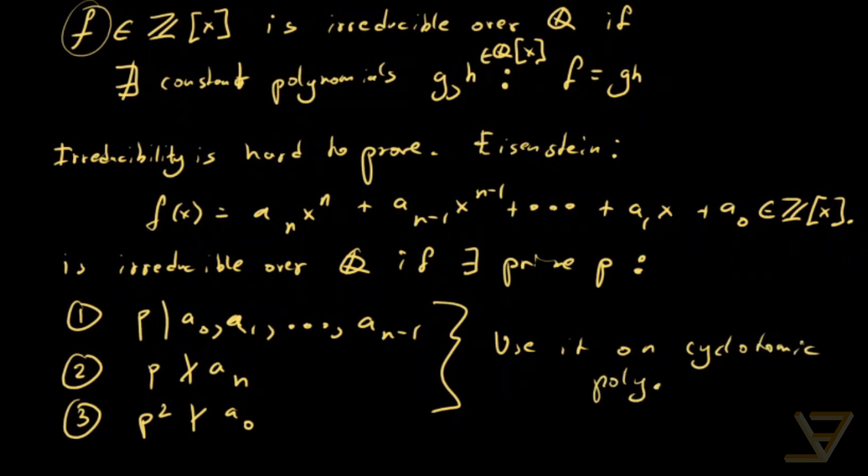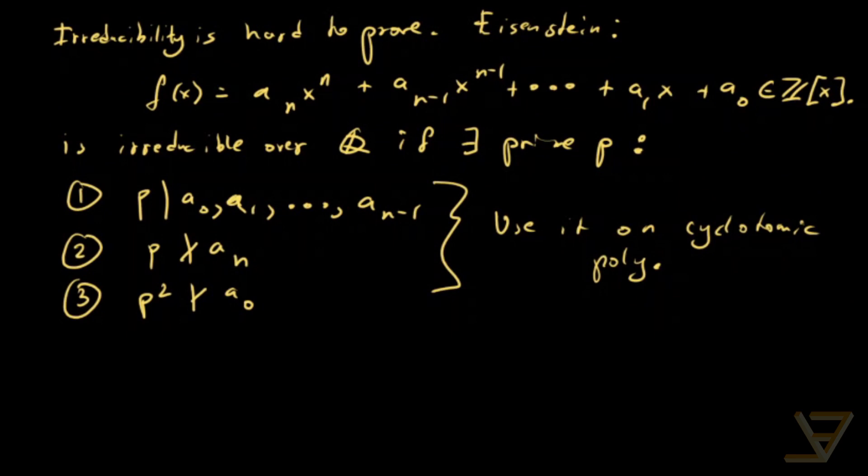So let me define for you what a cyclotomic polynomial is. For a prime p, the pth cyclotomic polynomial, which is denoted by capital phi_p(x), is equal to 1 plus x plus x squared all the way through to x^(p-1).